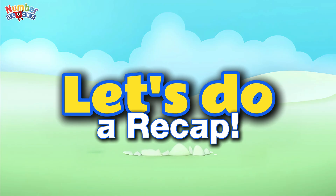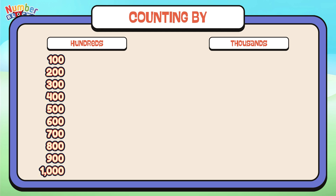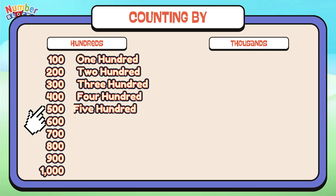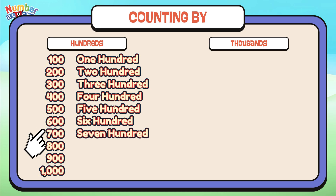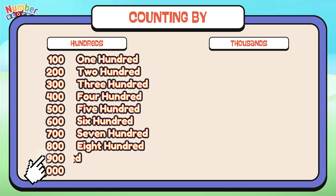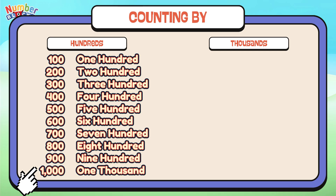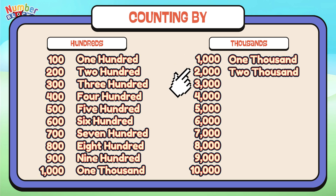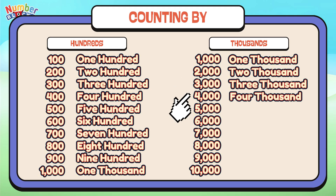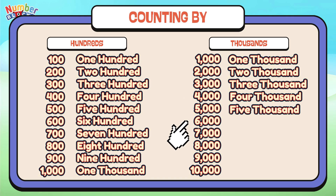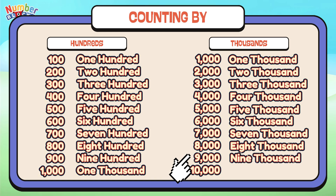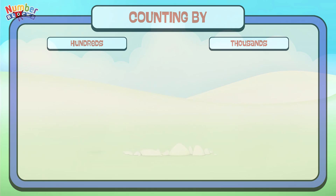Let's do a recap! Counting by hundreds: 100, 200, 300, 400, 500, 600, 700, 800, 900, 1,000. And now let's count by thousands: 1,000, 2,000, 3,000, 4,000, 5,000, 6,000, 7,000, 8,000, 9,000, 10,000.